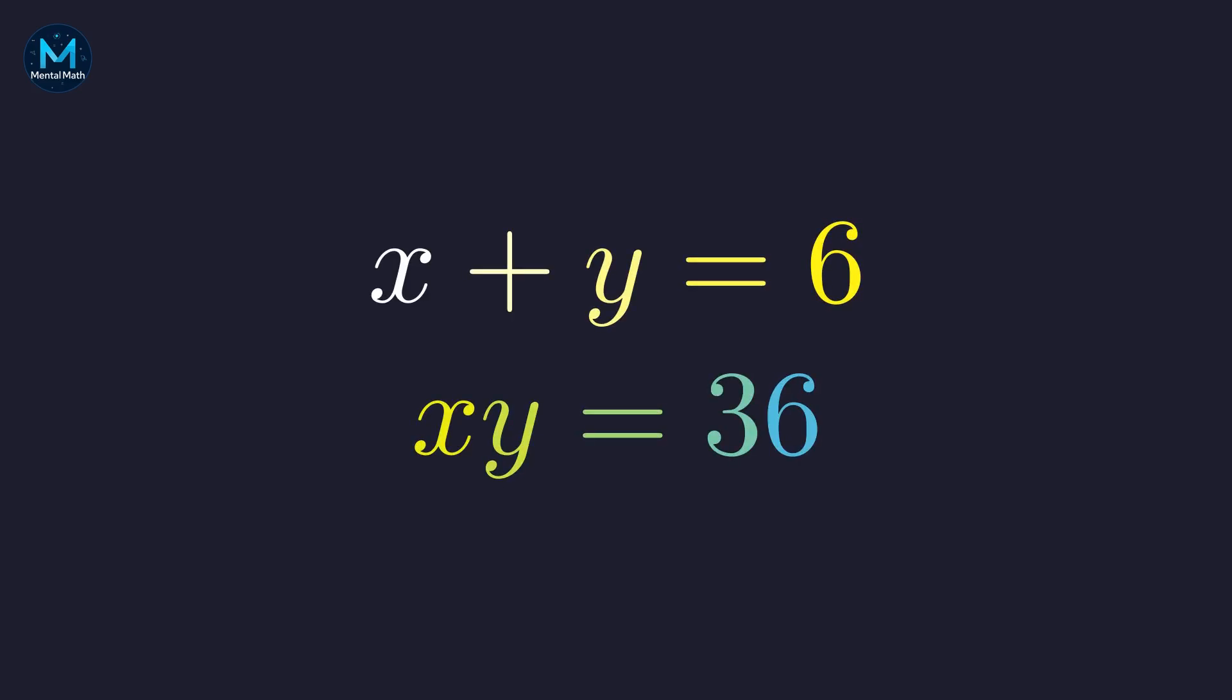Welcome back to Mental Math. Today, we're looking at a system that might seem straightforward at first. x plus y equals 6, and x times y equals 36. But here's the thing. This problem has a twist that takes us into some pretty interesting mathematical territory.